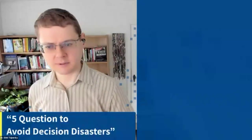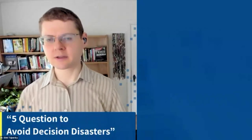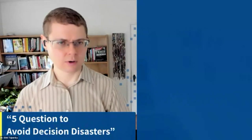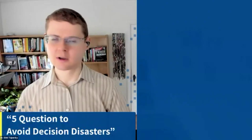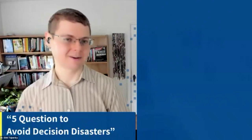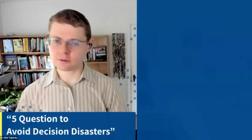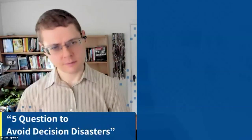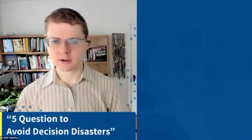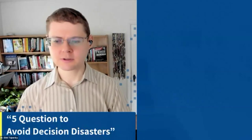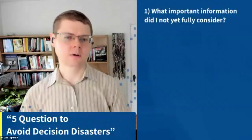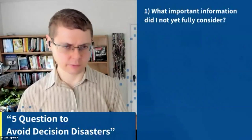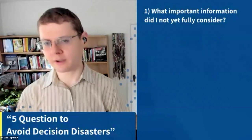What about addressing these problems? There are five questions you can use to avoid decision disasters when you make decisions around other people. It's a quick technique — once you learn these five questions, it's very easy to use them. You won't necessarily make the perfect decision, but you'll avoid the large majority of disastrous decisions. It's a great tool to use by yourself, or if making a decision with a team, have everyone answer the questions in advance of a meeting and then work through them one by one. The first question: what important information didn't I yet fully consider? We tend not to take into account evidence that goes against our intuitions or beliefs, so you really want to weigh contrary evidence more heavily than you intuitively do.